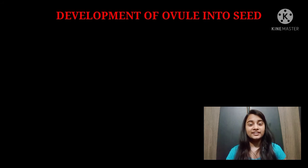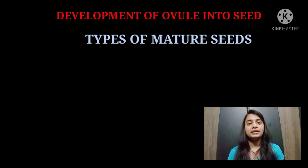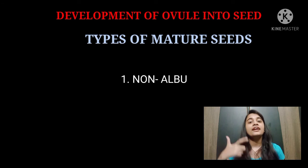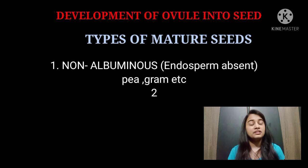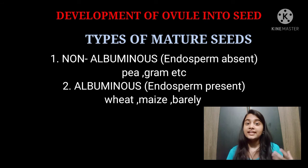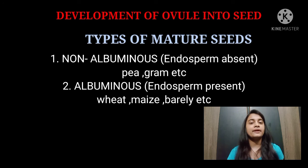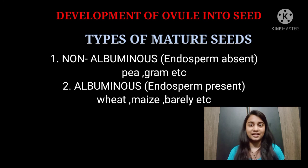Mature seeds are of two types: non-albuminous and albuminous. Non-albuminous seeds are those in which endosperm is absent — examples are pea and groundnut. Albuminous seeds are those in which endosperm is present — examples are wheat and barley.